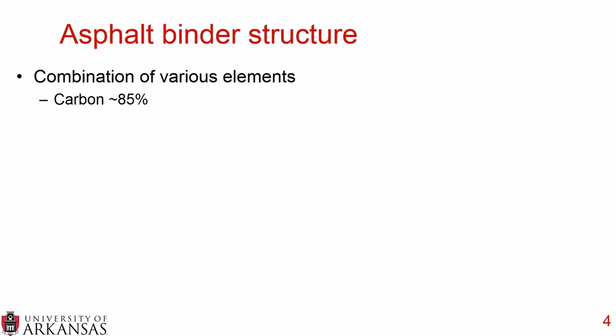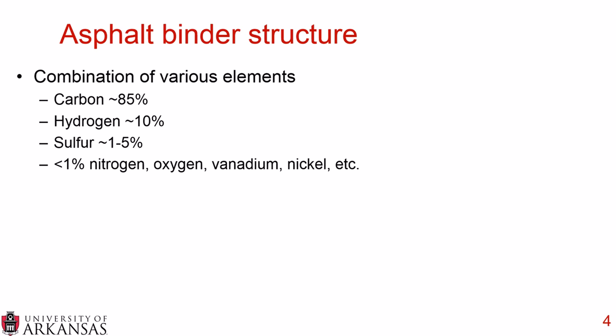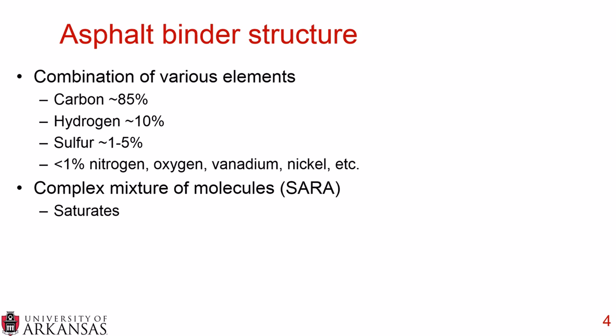Digging into the asphalt binder structure: it's a combination of various elements. The vast majority is carbon, about 85%, with about 10% hydrogen, and 1% to 5% sulfur depending on the petroleum source. Less than 1% consists of other elements including metals — the biggest ones being nitrogen, oxygen, vanadium, and nickel.